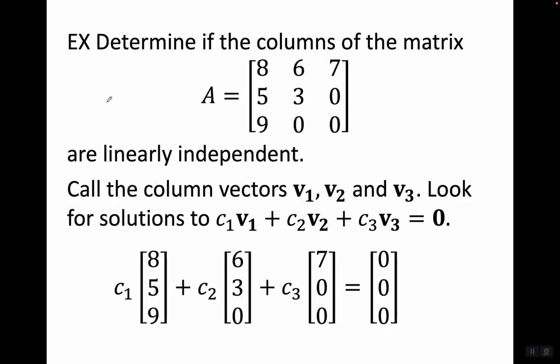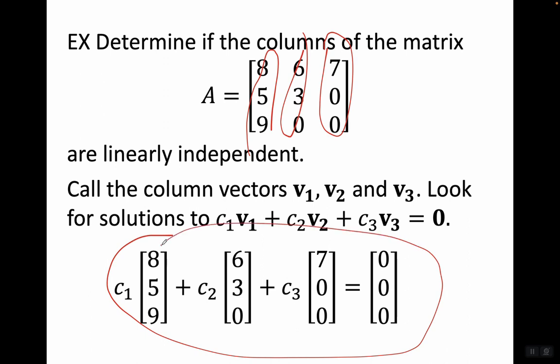So let's determine if the columns of the matrix are linearly independent. Let's look at these columns: [8,5,9], [6,3,0], and [7,0,0]. Let's call those column vectors v1, v2, and v3. We're going to look for solutions for c1·v1 + c2·v2 + c3·v3 = 0. Are there non-trivial solutions, or are the only solutions c1 = 0, c2 = 0, c3 = 0?